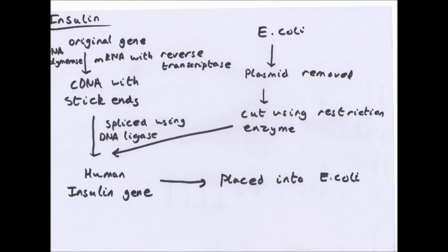What you do is go into the cells which do make insulin - which, as you'll remember, is the beta cells in the islets of Langerhans in the pancreas - and you find the mRNA and take that. But you can't use mRNA directly; you have to turn it into DNA. So you get mRNA and use something called reverse transcriptase. When you are transcribing DNA it produces an mRNA strand; reverse transcriptase does the opposite - you have an mRNA strand and it turns it to DNA. Then you treat it with DNA polymerase, producing something called cDNA, which are copies of the human insulin gene.